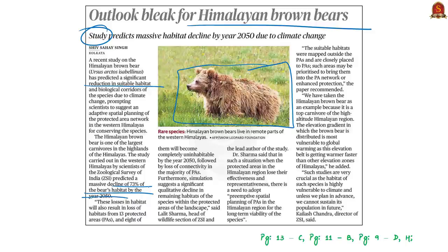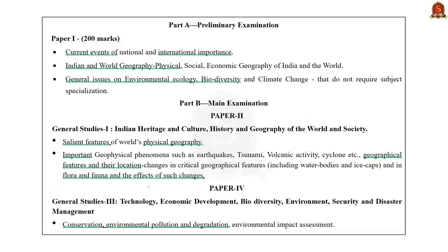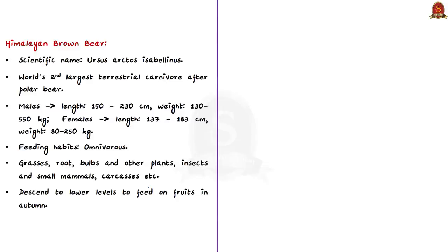Let us understand some important facts about the Himalayan brown bear. The syllabus relevant for the analysis is highlighted for your reference. The Himalayan brown bear is the world's second-largest terrestrial carnivore; the world's largest is the polar bear. It is a large bear with thick fur, most often sandy or reddish-brown in color.